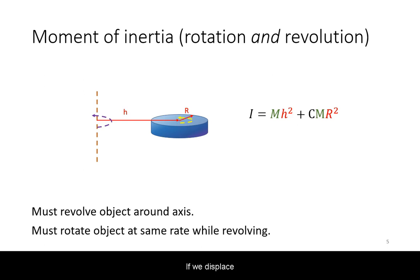If we displace the rotational axis from the center of mass of the object, then the torque needed to produce angular acceleration must account for both the object revolving around the axis and its own rotation at the same time.